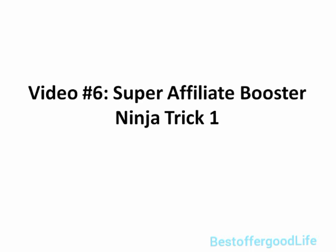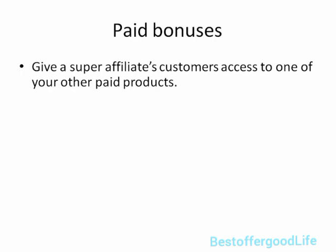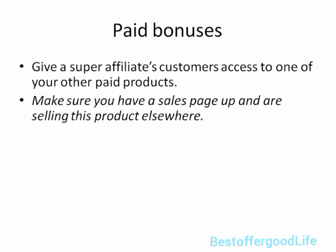Hello and welcome to video number six, the super affiliate booster ninja trick number one. This method deals with paid bonuses. Basically, you want to give a super affiliate's customers access to one of your other paid products. In order for this to work, you need to make sure that you have a sales page up and are selling this product elsewhere — and you can even set up pages to sell it. The reason is: if the customer can see that this is an actual paid product, they're getting it for free if they buy through somebody else's link.